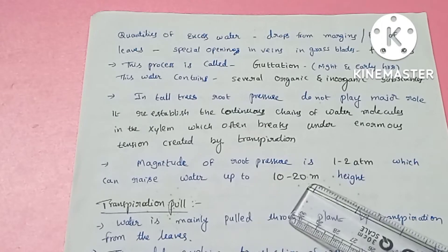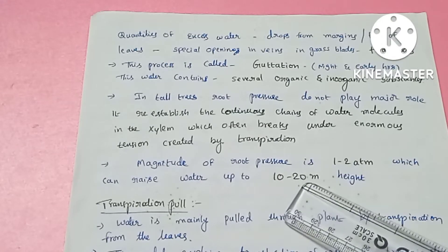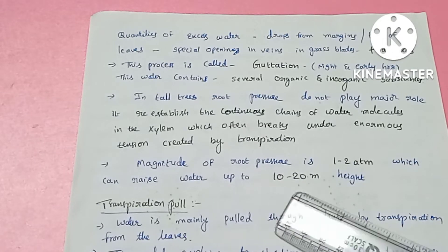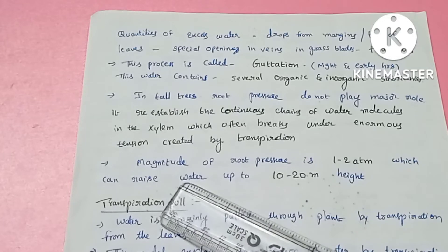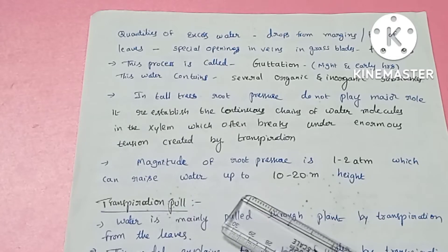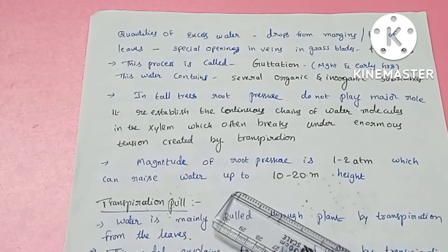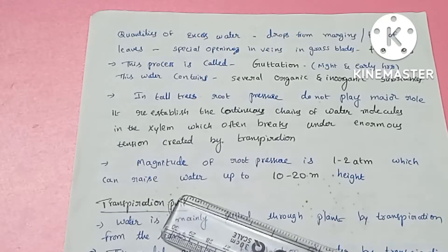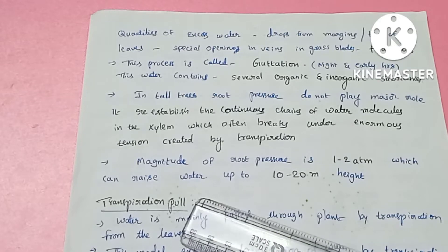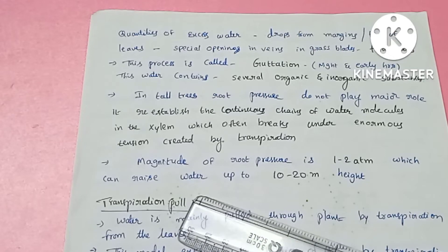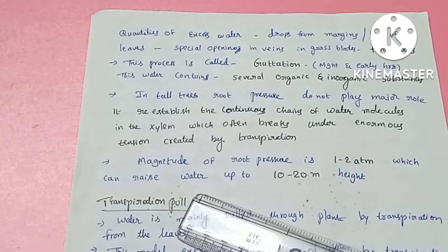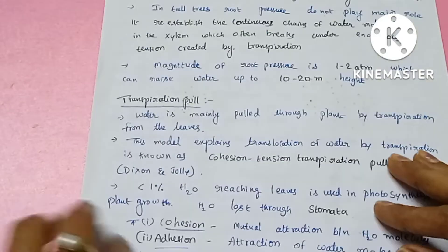The extent of root pressure is 1 to 2 atmospheres. This 1 to 2 atmosphere pressure helps raise the water. This is all about root pressure — it provides a gentle push in the process.